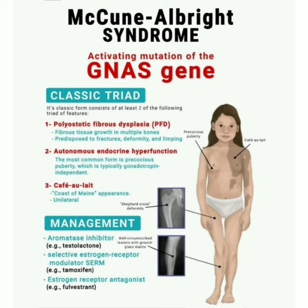The classic triad: its classic form consists of at least two of the following triad of features. Number one, there is polyostotic fibrous dysplasia (PFD), which includes fibrous tissue growth in multiple bones producing bony fracture, deformity, and limping. Number two, autonomous endocrine hyperfunctions — the most common form is precocious puberty, which is typically gonadotropin-independent.